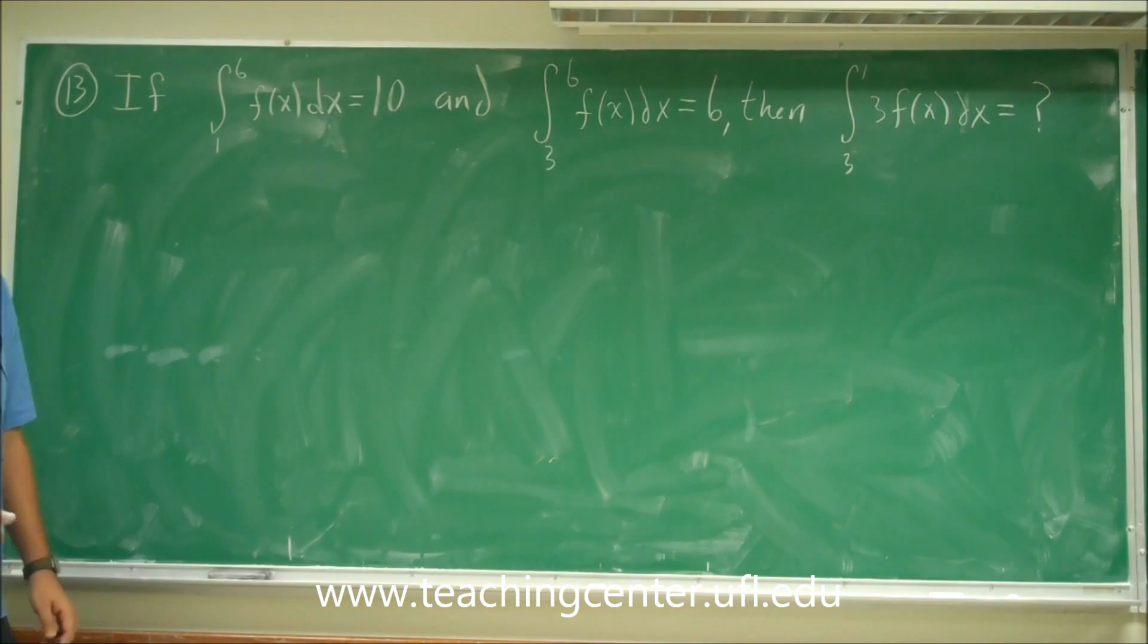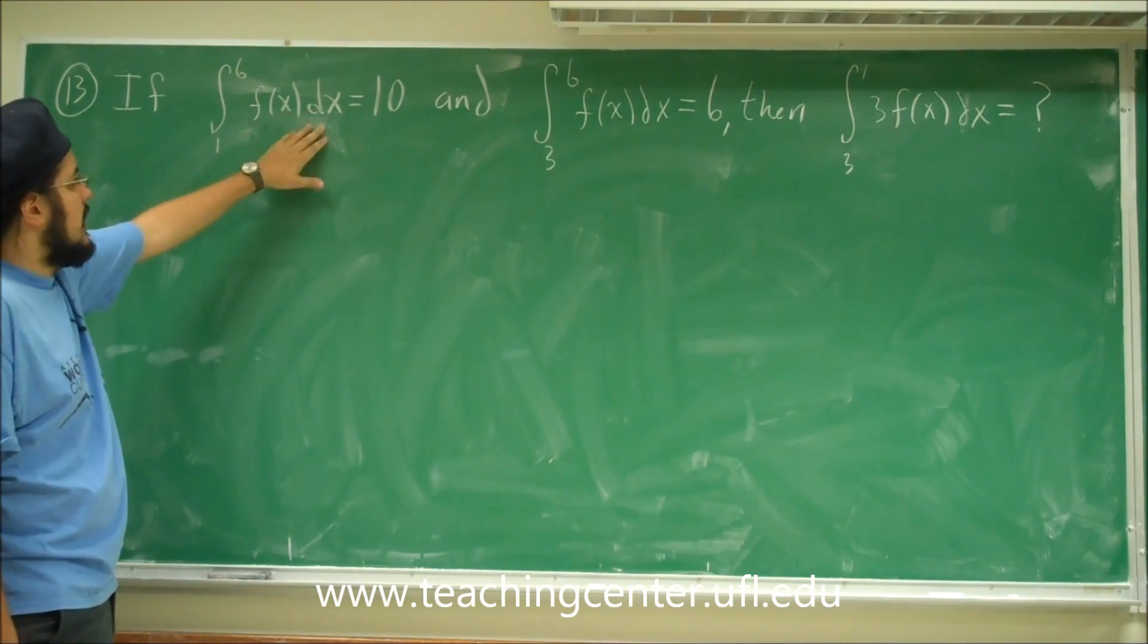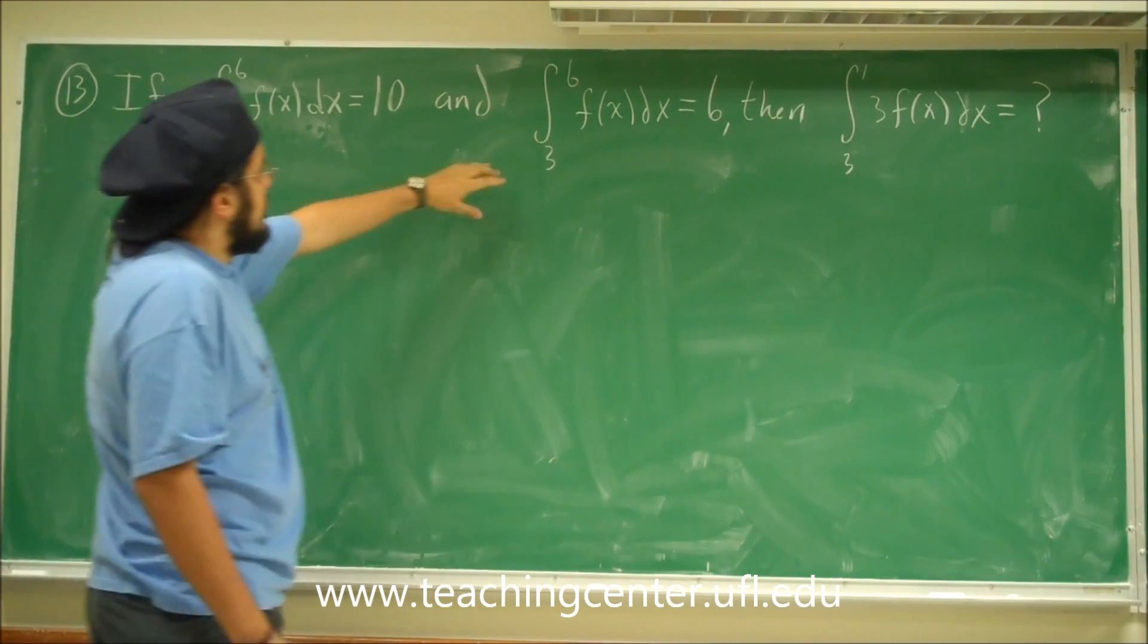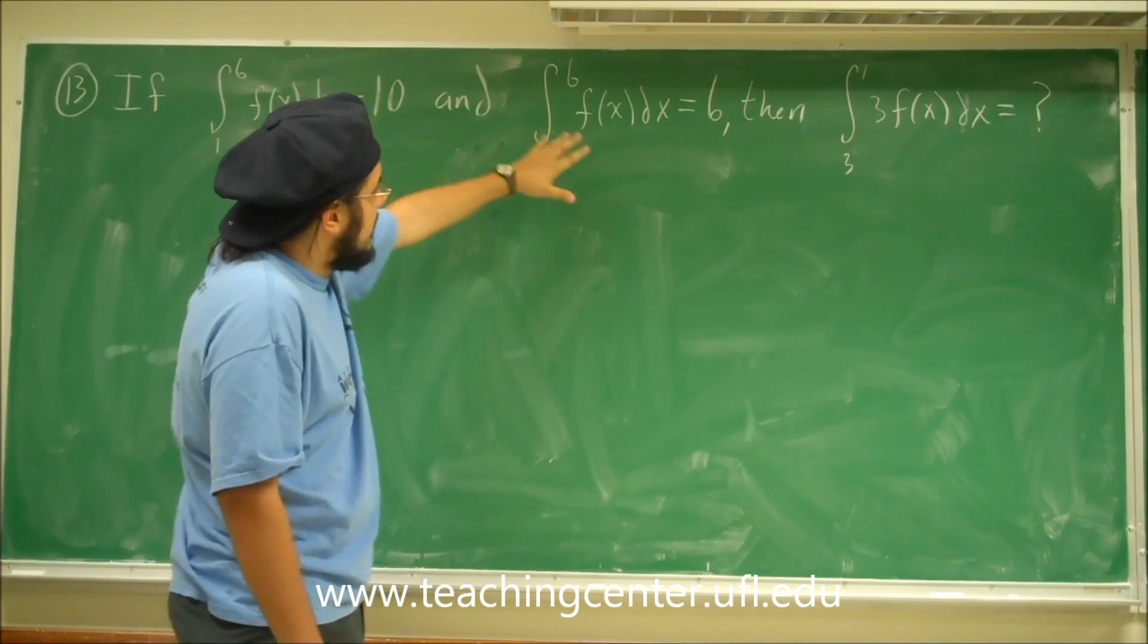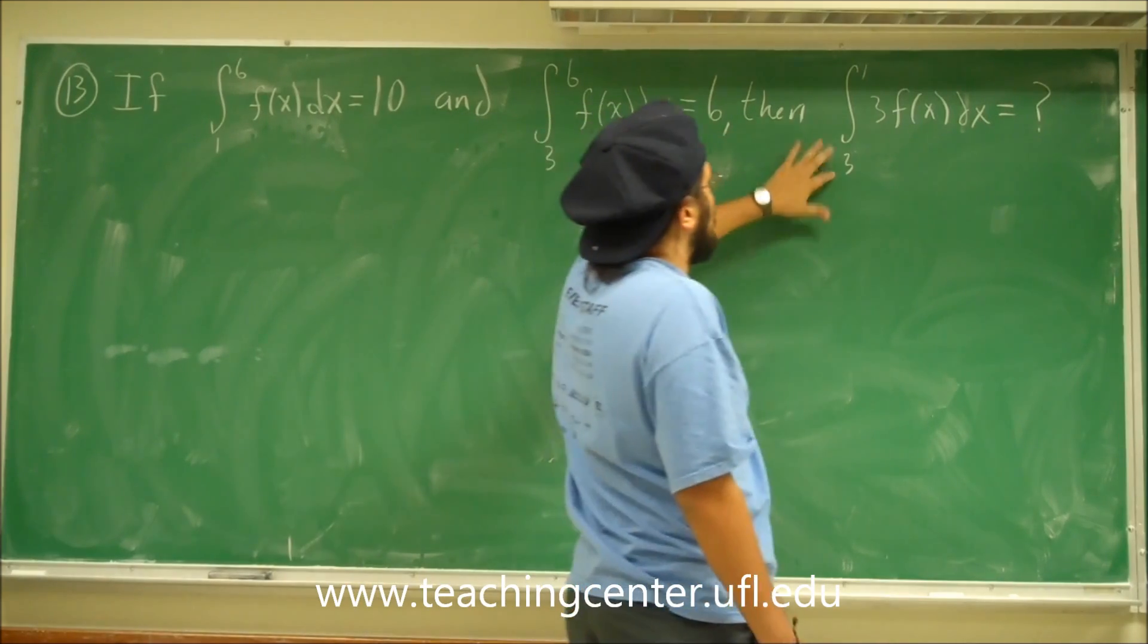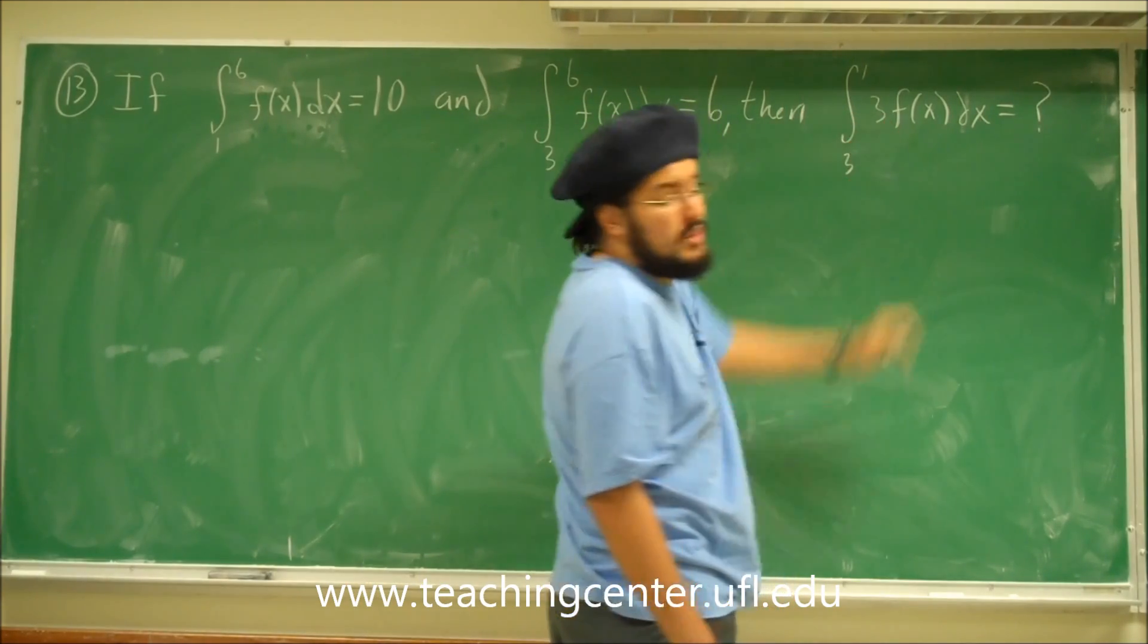All right, so there's problem 13. Problem 13 pretty much says if the integral from 1 to 6 of a function dx is equal to 10, and the integral from 3 to 6 of that same function is equal to 6, then what is the integral from 3 to 1 of 3 times that function equal to?